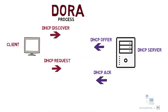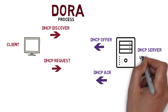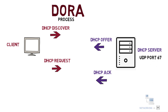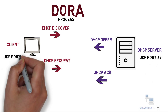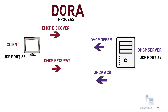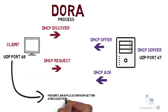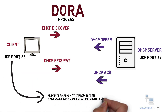DHCP is a UDP service and uses two UDP port numbers for its operation. The DHCP server uses UDP port 67, and the DHCP client uses UDP port 68. The use of these port numbers prevents an application from receiving a message from a completely different protocol.